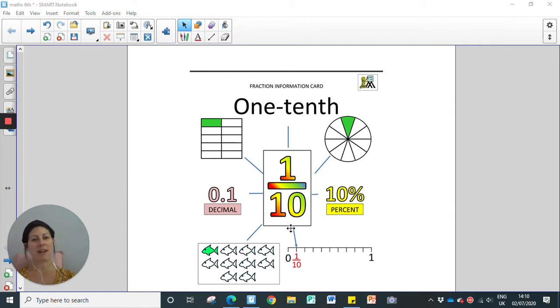So in the middle we have our fraction. As you know, the numerator represents how many parts there are, and then the denominator represents how many parts there are all together. And then we can see at the top there are a couple of diagrams that represent one tenth, one part being shaded out of ten parts all together.